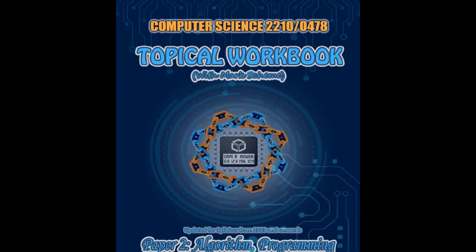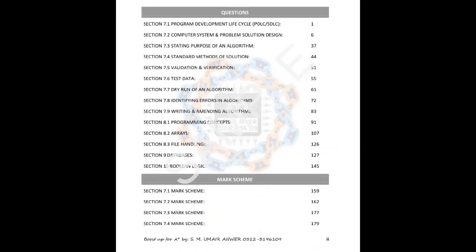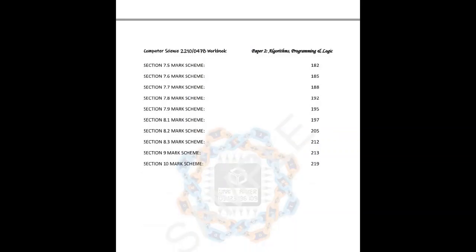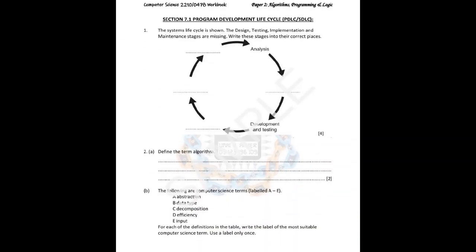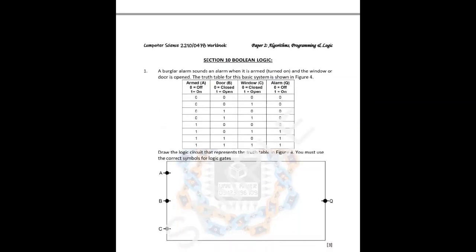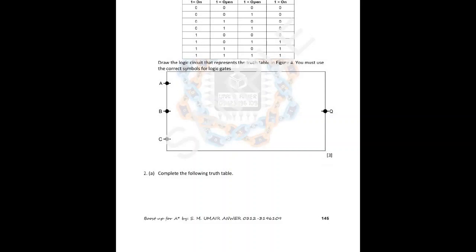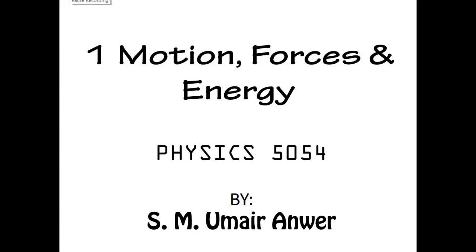Similar to the paper one workbook, I have also designed a workbook for paper two — algorithm, programming and logic — for CIE 2210 or 0478, GCE or IGCSE computer science. It contains questions on every subsection of the syllabus content for paper two, along with the mark scheme. Topics include sections 7.1, 7.7, 8.3, and section 10 boolean logic. A must buy if you want a very good score in your Cambridge examination.